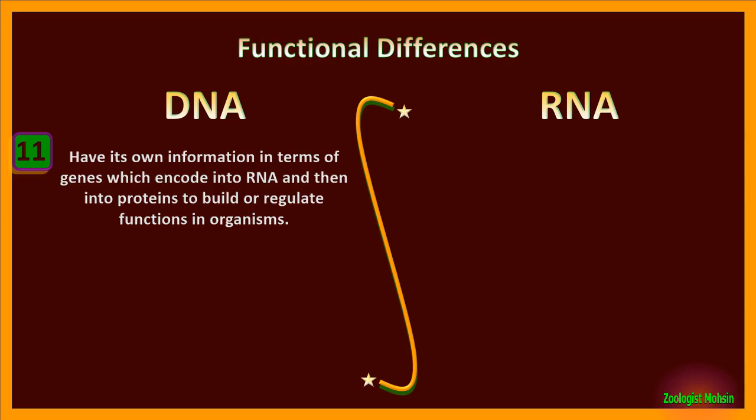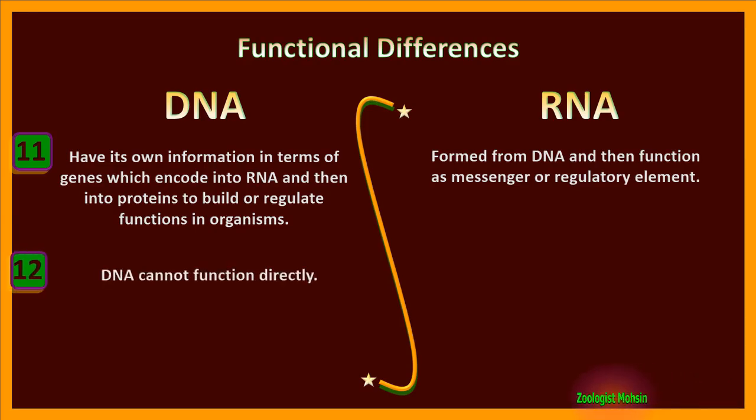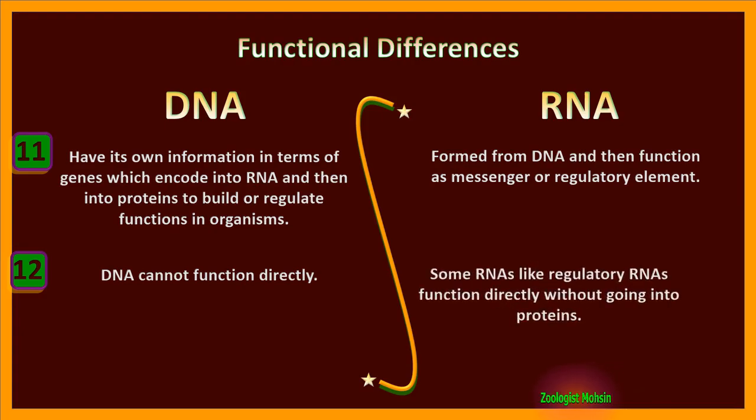Functional differences. DNA has its own information in terms of genes which encode into RNA and then into proteins to build or regulate functions in organisms. While RNA is formed from DNA and then functions as messenger or regulatory element. DNA cannot function directly. Some RNAs like regulatory RNAs function directly without going into proteins.